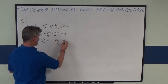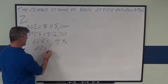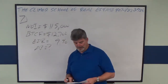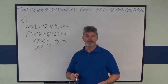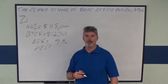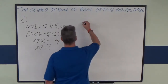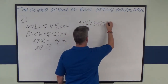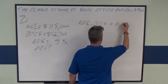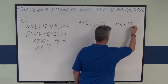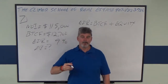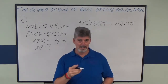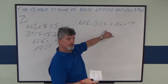A few things going on here. First of all, you have to remember the formula for equity dividend rate: it is before-tax cash flow divided by your equity. The other thing is, on a real estate transaction, the day you close, your down payment is your equity. So in this formula we can also say before-tax cash flow divided by down payment.